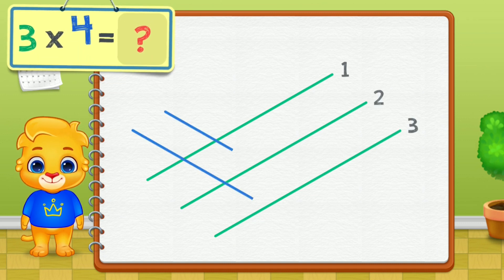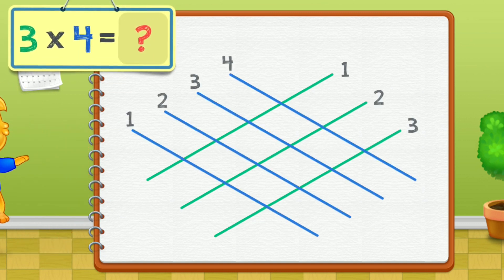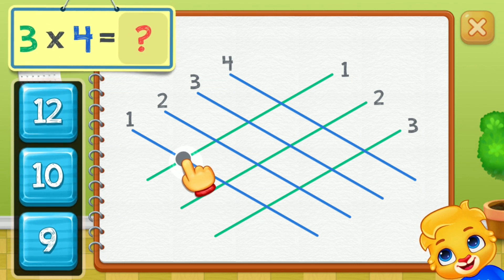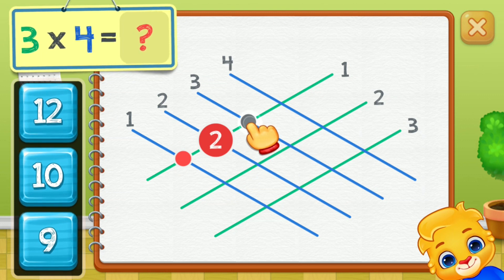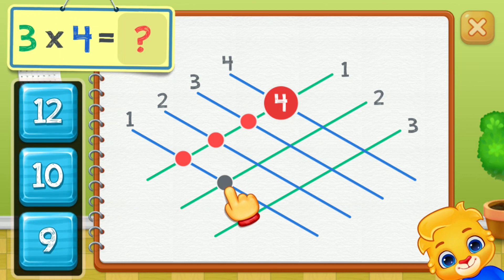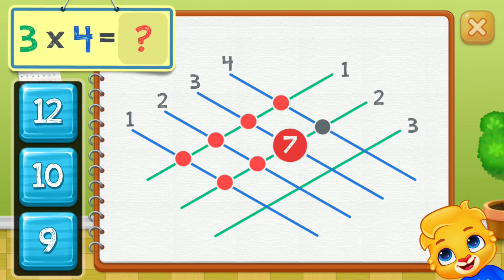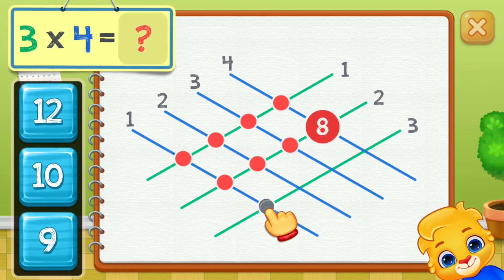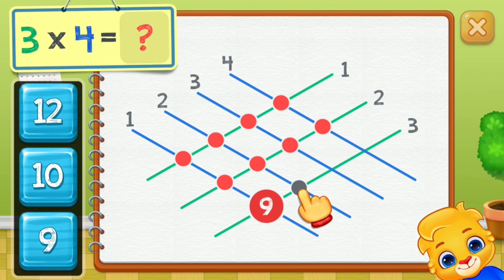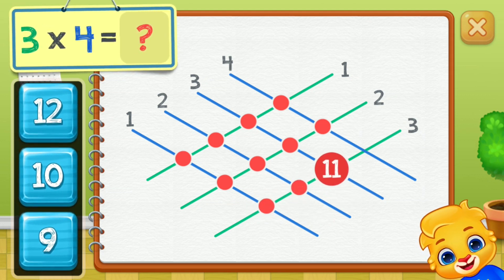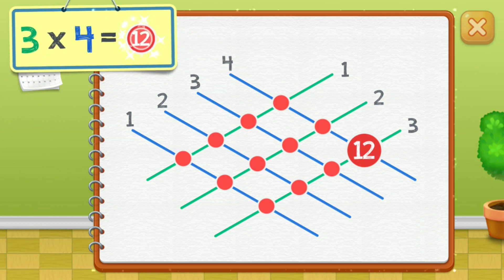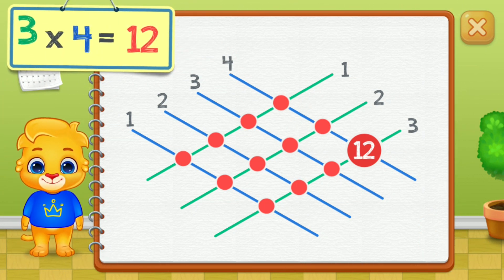Three times four equals... touch intersection points. Two, three, four, five, six, seven, eight, nine, ten, eleven, twelve. Three times four equals twelve.